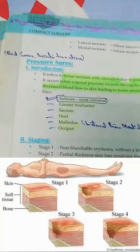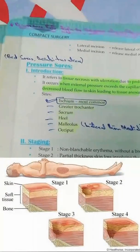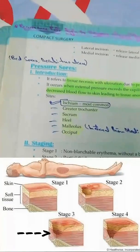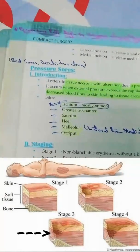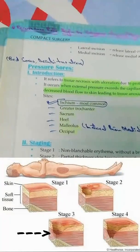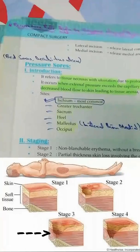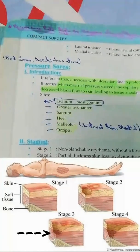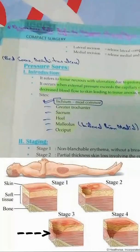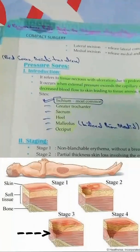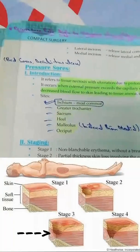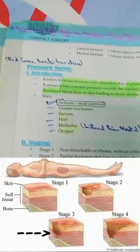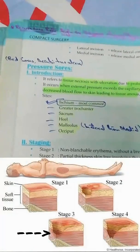Stage 3 is full thickness skin loss which extends deep into the subcutaneous tissue. Even the lower dermal tissue is damaged, so we call it full thickness skin loss. However, the fascia is still intact in stage 3.